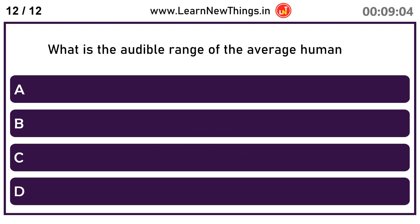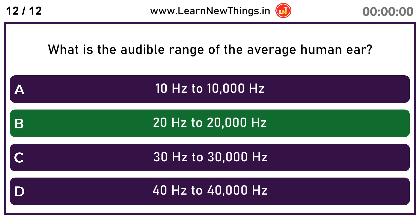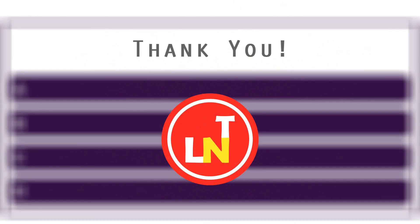What is the audible range of the average human ear? 20 hertz to 20,000 hertz. To be continued.